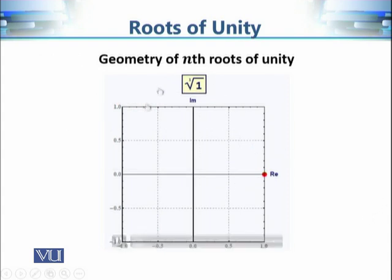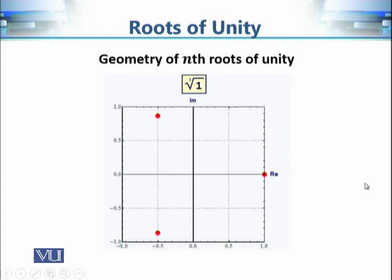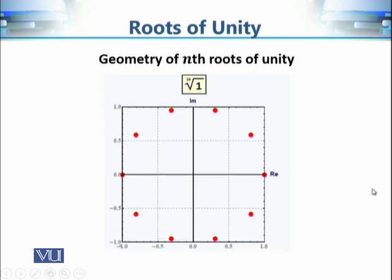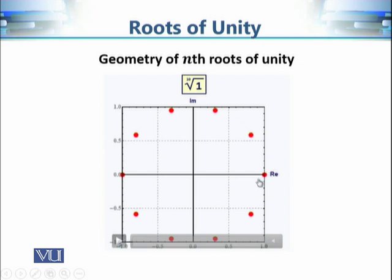In general, the nth roots of unity have the following geometry: when n equals 1 we get one root; when n equals 2 we get two roots at opposite ends of a line segment; when n equals 3 we get three roots that are vertices of a regular triangle; when n equals 4 they are vertices of a square — and all roots lie on the unit circle. As n increases we get more roots, but two properties are always fixed: all roots lie on a circle of radius 1, and they are vertices of a regular polygon, with 1 always being one of the roots.